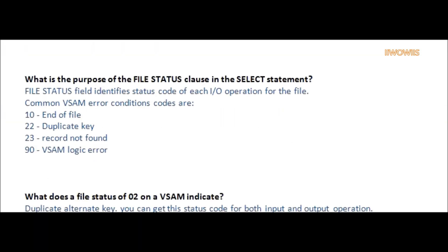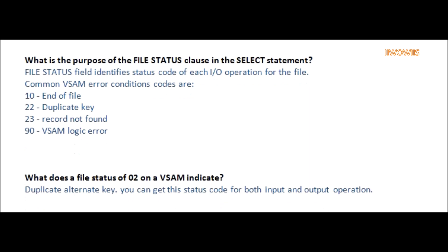Question: What is the purpose of the File Status clause in the Select statement? Answer: The File Status field identifies the status code of each input/output operation for the file. Common VSAM error codes are: Error code 10 indicates end of file; Error code 22 indicates duplicate key found; 23 indicates record not found; and 90 indicates VSAM logic error.